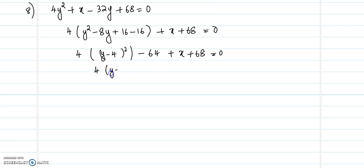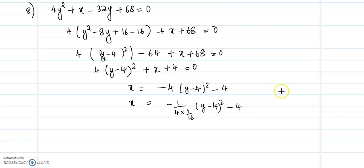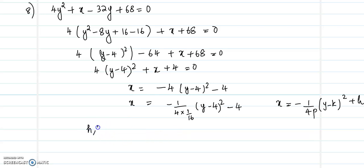That gives us 4(y minus 4) whole squared, and 4 times minus 16 is minus 64, plus x plus 68 equal to 0. So we get 4(y minus 4) whole squared plus x plus 4 equal to 0, giving x equal to minus 4(y minus 4) whole squared minus 4. This is of the standard form x equal to minus 1 over 4p times (y minus k) whole squared plus h, so h,k equals (minus 4, 4), which is the vertex.